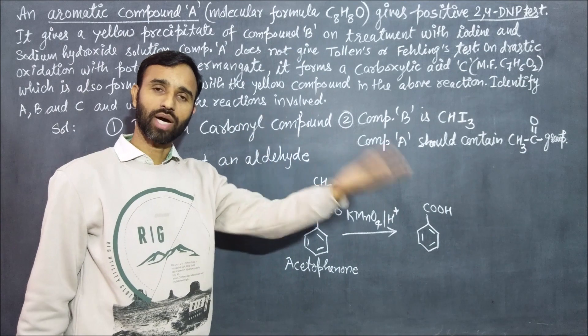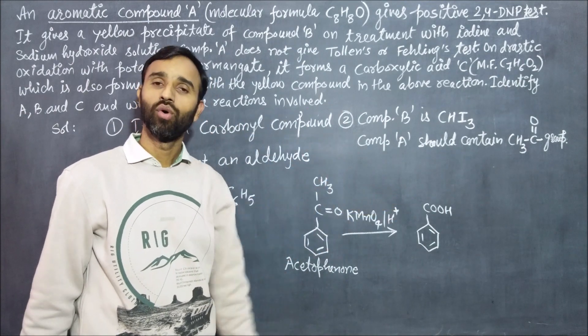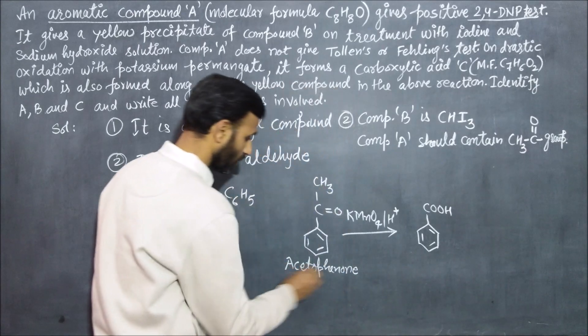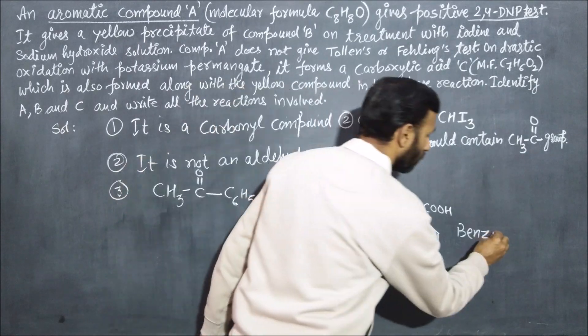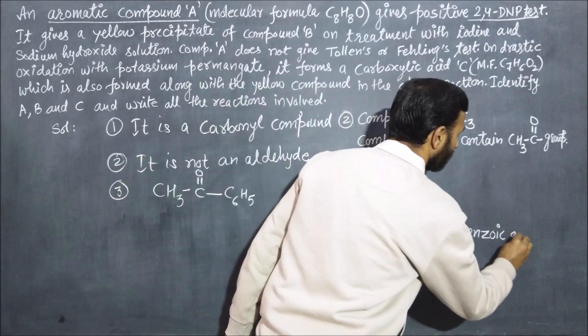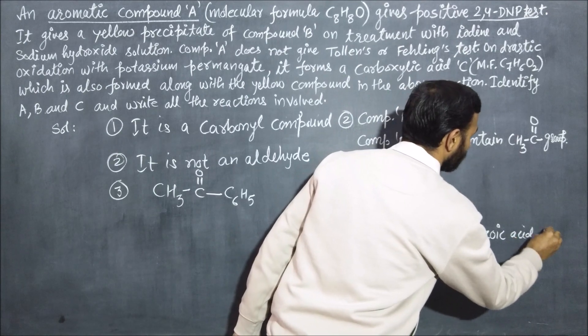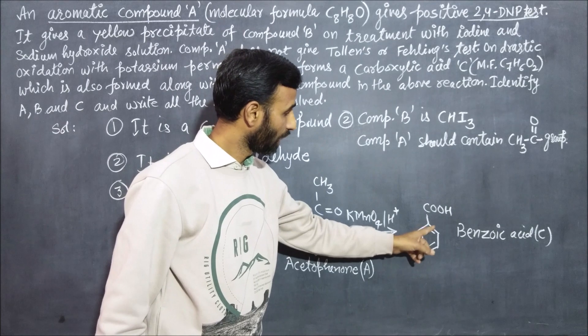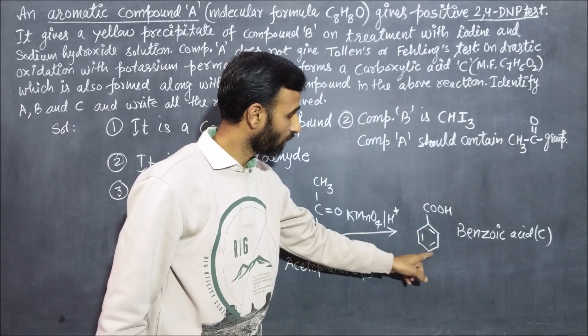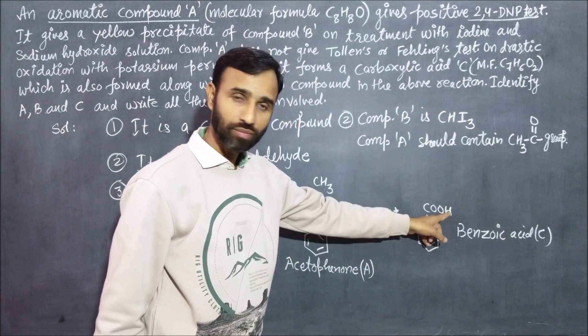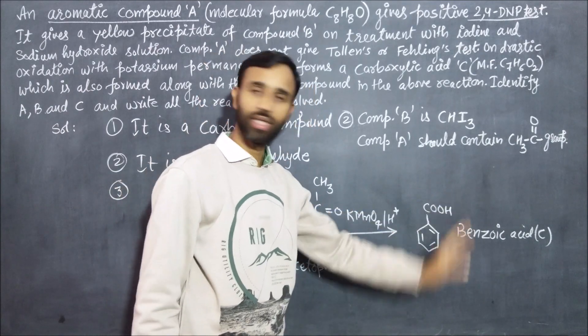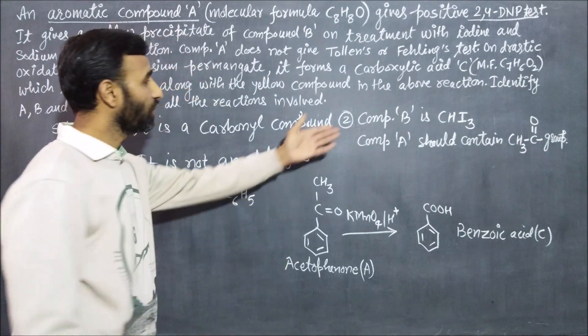The rest becomes carbon dioxide and hydrogen becomes water. We get compound C, which is benzoic acid. Compound C is benzoic acid, C7H6O2.